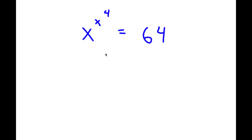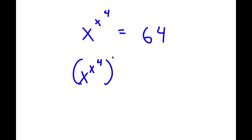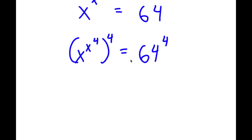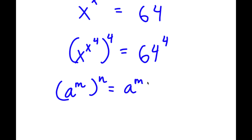For this problem, I have x to the power of x to the power of 4 is equal to 64. To solve this, I'm going to first take the power of 4 on both sides. So now I have x to the power of x to the power of 4, all to the power of 4, is equal to 64 to the power of 4.